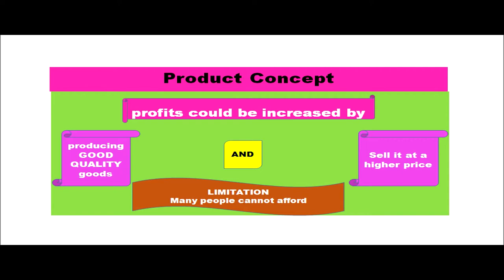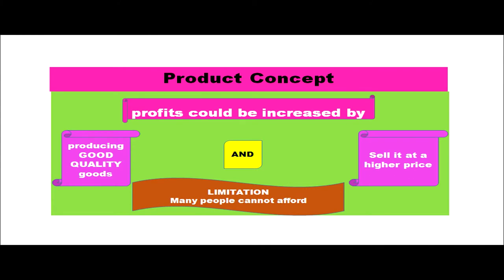The next one is the product concept. Here it is believed that profits could be increased by producing good quality goods and selling them at a higher price. We concentrate more on the quality of the goods, and when high quality goods are produced using high technology, the result is a higher price. But the limitation here is that many people cannot afford to buy these goods because of the higher price.